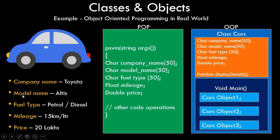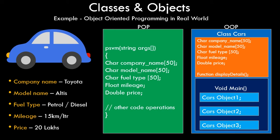You want to store the company name, model name, fuel type, mileage, and price. In the procedural approach — shown in the green box with the main function — you'd create five different variables: three arrays, one float, and one double, just to store data for one car. Imagine storing data for 10 or 20 cars: multiply that by five and the program becomes very lengthy, inefficient, and tedious to manage. Again, all that data would be globally available — procedural oriented programming is not really efficient for this real world scenario.